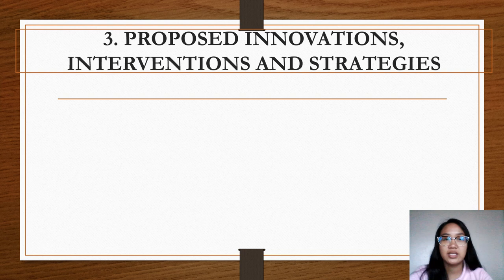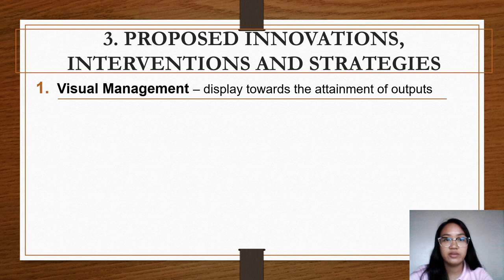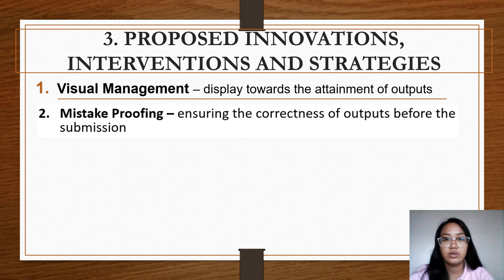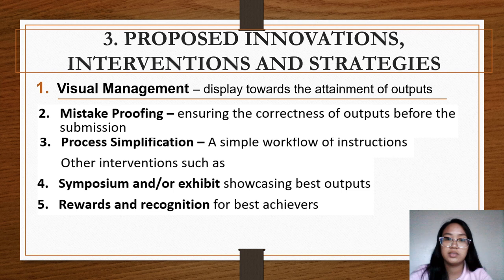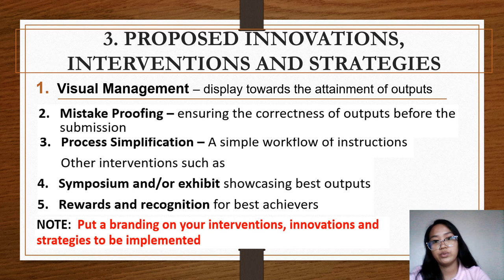Proposed innovations, interventions, and strategies include: number one, visual management — a tangible display that can be seen by respondents to help attain expected outputs. Number two, mistake proofing — ensuring correctness of outputs before submission to the process owner or subject teacher. Number three, process simplification — a simple workflow or flowchart of instruction. Other interventions such as symposiums, exhibits showing best outputs, and rewards and recognition for best achievers may also be implemented. We have to remember to put a branding on our interventions, innovations, and strategies.